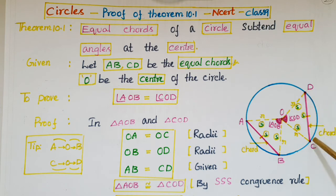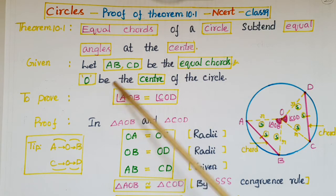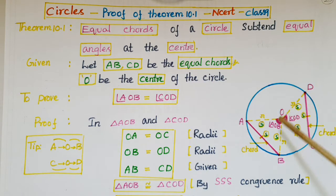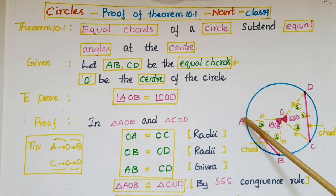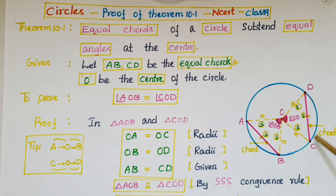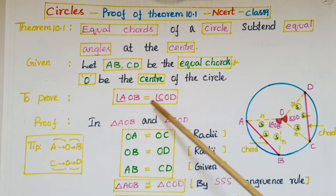AB and CD are the equal chords, so AB is equal to CD. Let O be the center of the circle. The angle subtended by chord AB at center O is angle AOB, and the angle subtended by chord CD at center O is angle COD. We have to prove that angle AOB is equal to angle COD.